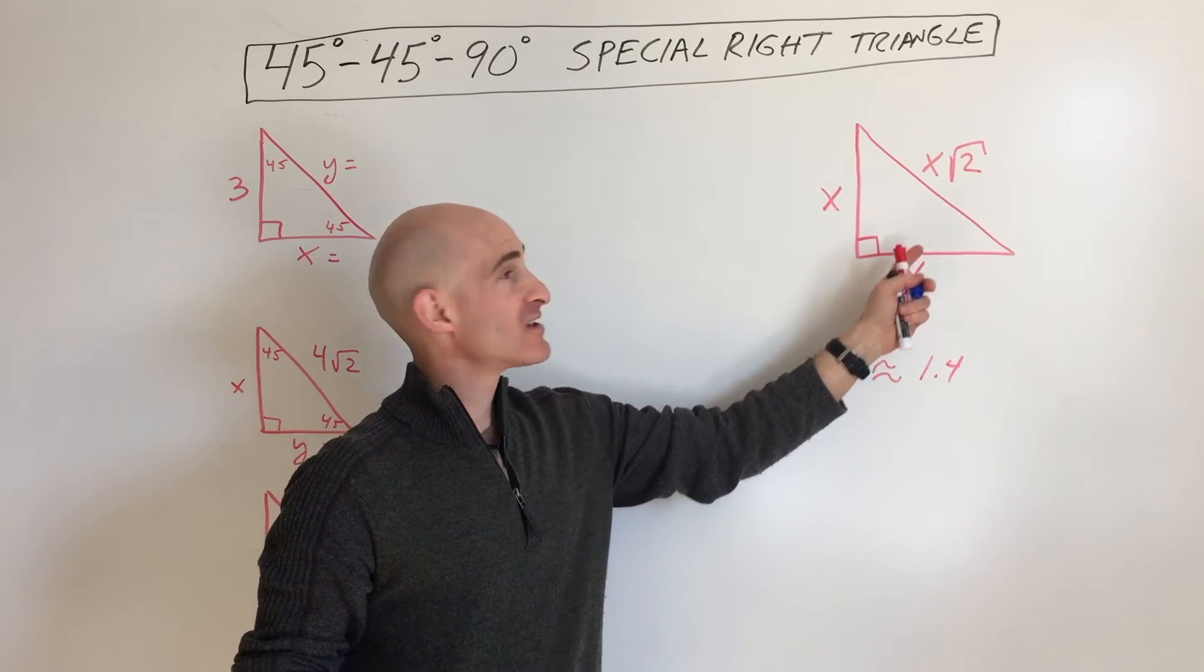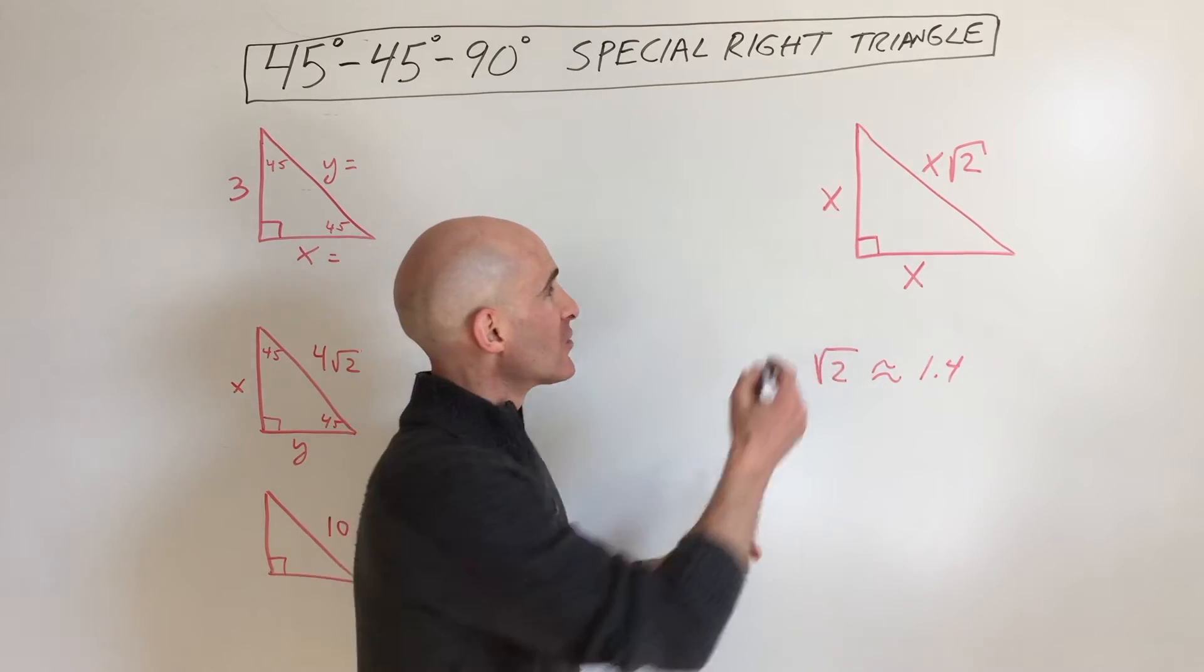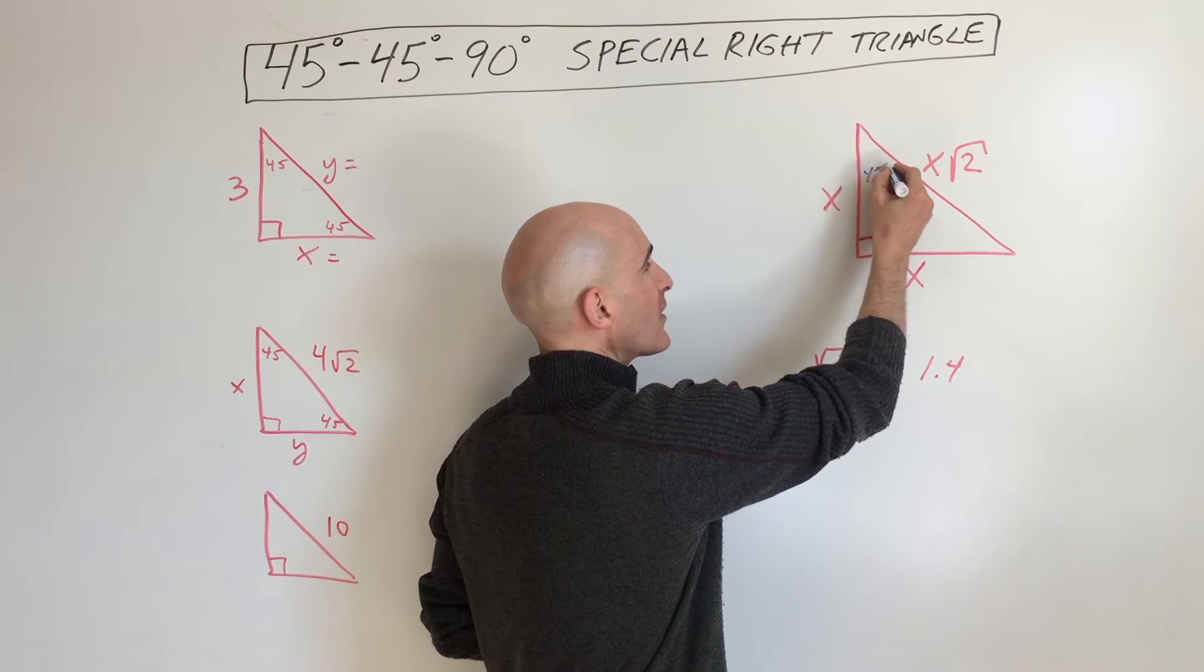Here it's x, x, and x square root of 2. So these angles here are the 45 degree angles.